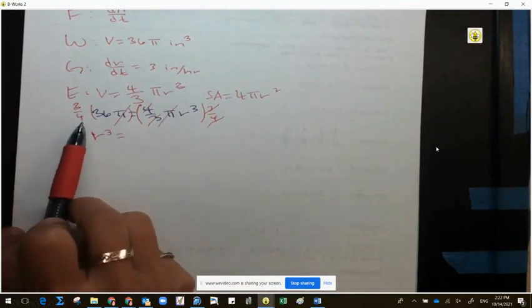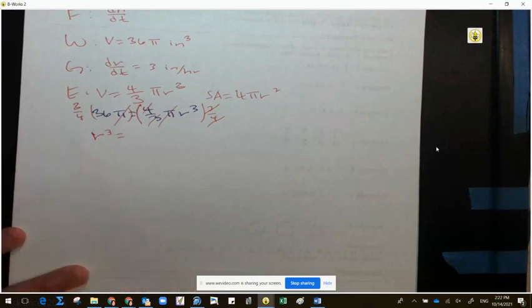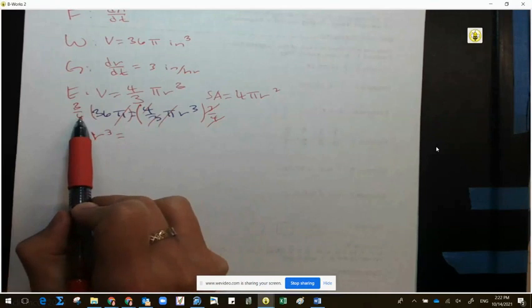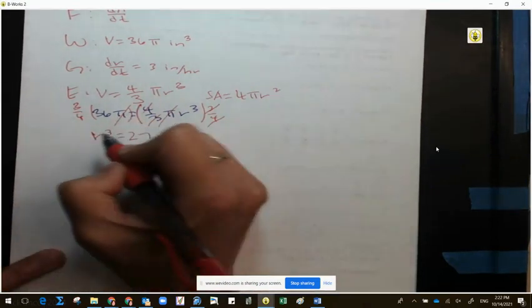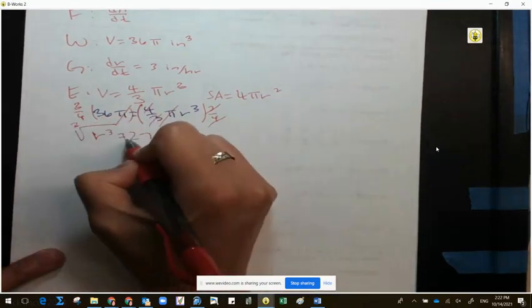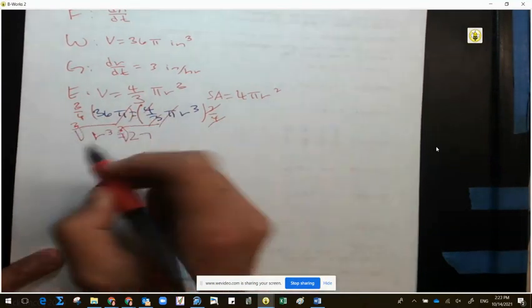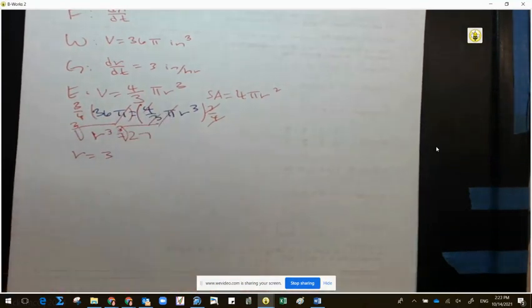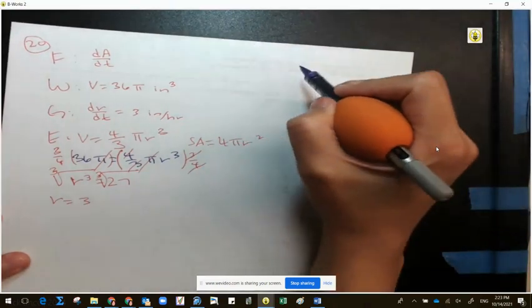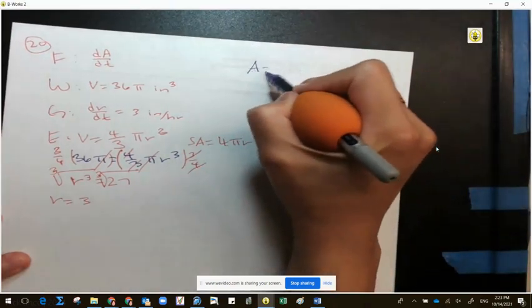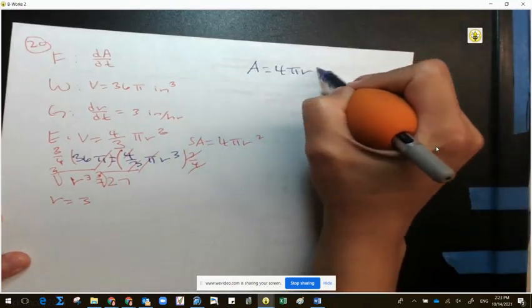The top number means multiply, the bottom number means to divide. What is 36 divided by 4? Nine times three is 27. Now when I cube root this on both sides, what is my radius? Three. So we know our radius is three. So now let's go ahead and find the derivative of the surface area. I'm going to write out area is equal to 4 pi r squared.